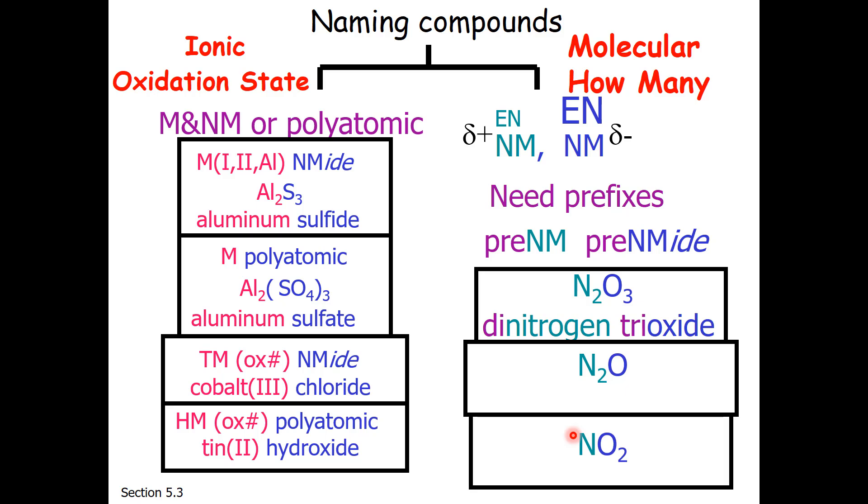The next one we would call dinitrogen monoxide. Again, notice the -ide ending. And typically, if you have two vowels together, one of the vowels is dropped. Monooxide would sound strange. Monoxide. The last one is nitrogen dioxide. So here's another naming convention. If you have one of the first element, you do not need mono. Simply the element name will be fine.